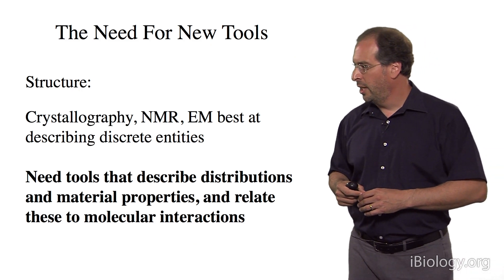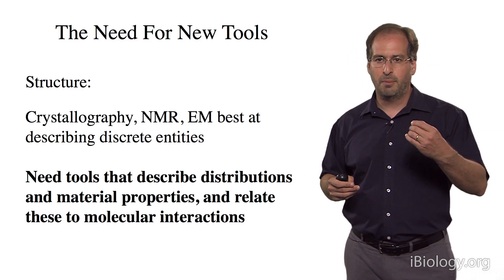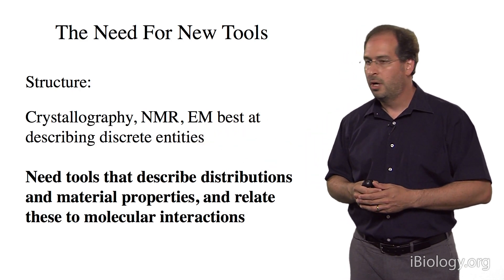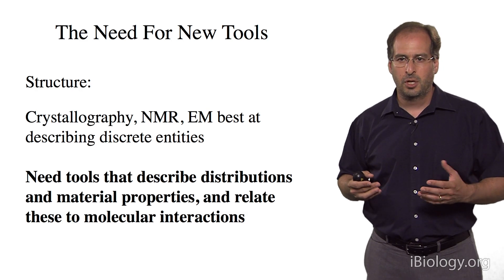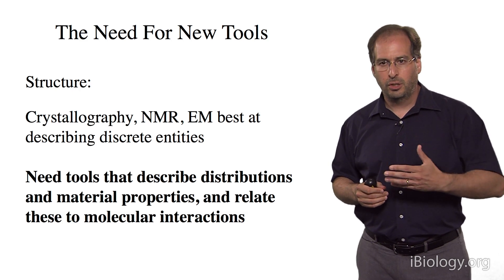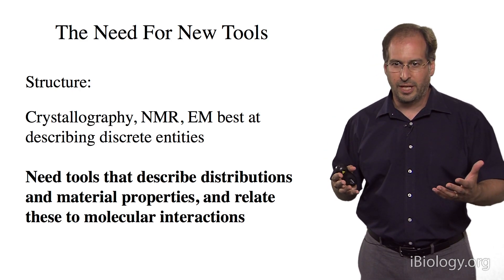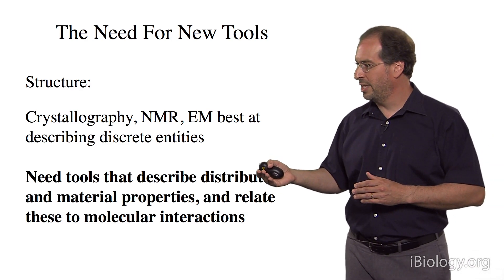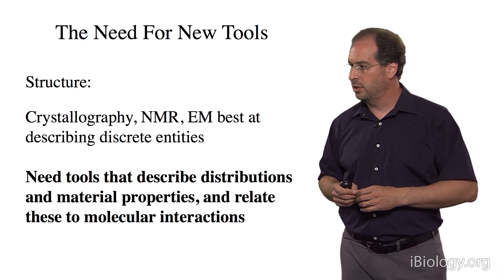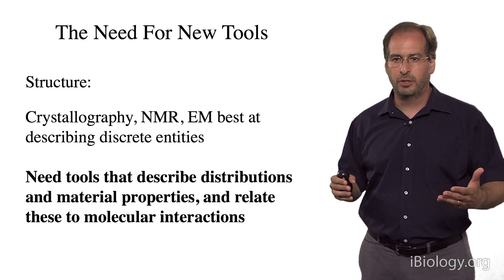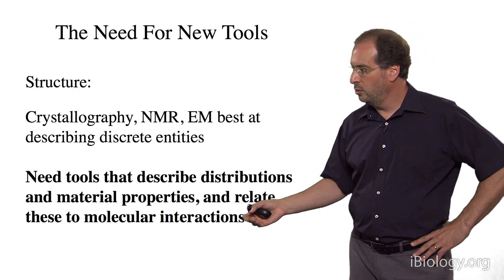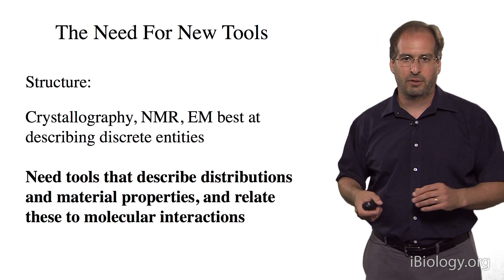In terms of tools, the techniques used to study macromolecular structures — X-ray crystallography, NMR, electron microscopy — are best at describing discrete entities or fluctuations between discrete conformational states. However, these cellular structures are almost certainly not discrete entities, so we need new tools that describe them as distributions of structures and stoichiometries, and tools that allow us to assess and perturb their material properties. We also need ways of relating these properties to the individual macromolecular interactions that govern their formation.